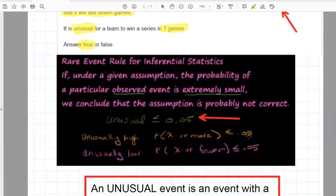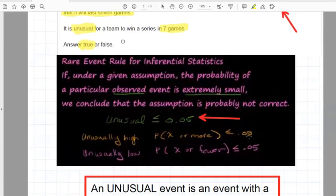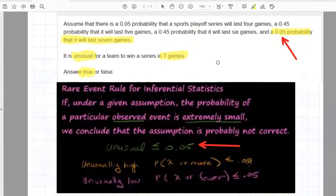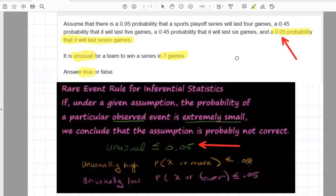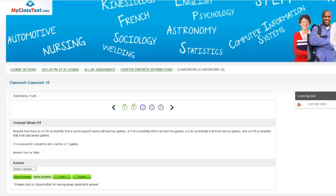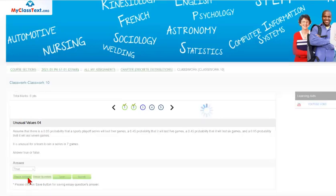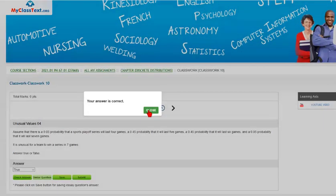So therefore, this statement that it is unusual for the team to win a series in seven games is true because that probability is 5%. So coming back to our classwork, this statement is true. And for that, we'll answer those lines.